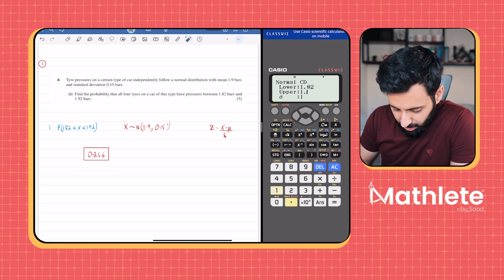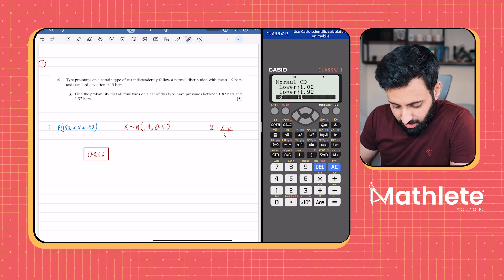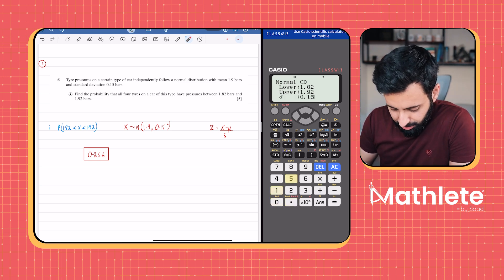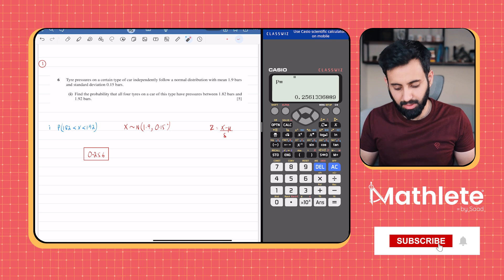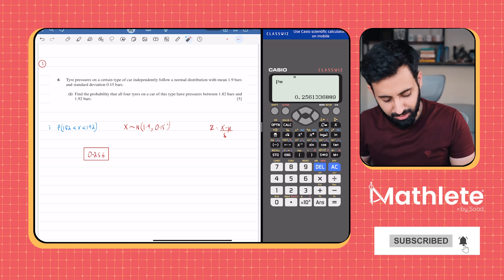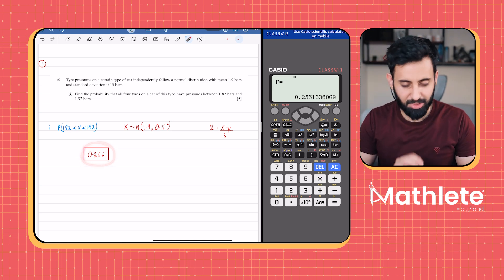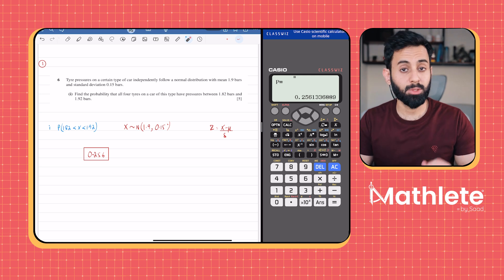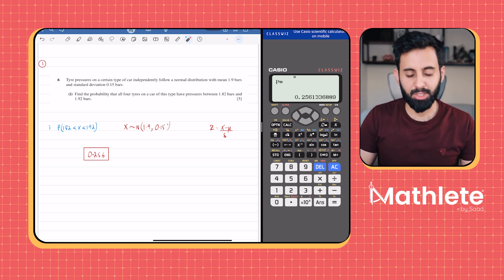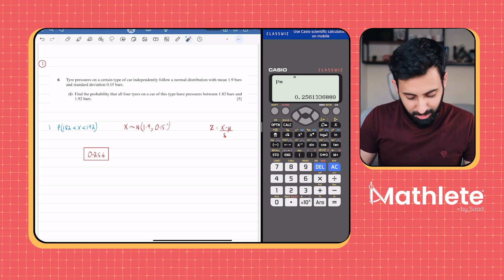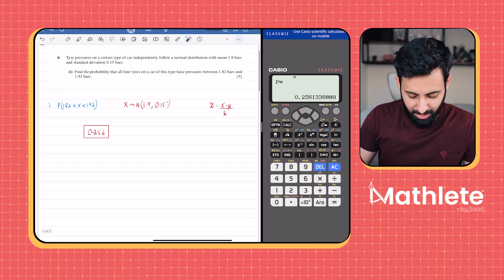What's the lower limit? That's 1.82, so type that, press equals. What's the upper limit? 1.92, type that, press equals. What's the sigma, the standard deviation? That is 0.15. What's the mean? That's 1.9. Wait for the magic, press the equals sign. There you go, 0.256. That's the answer. Your calculator has done all the hard work for you, which you still have to do, but now you can be 100% sure that you've done it correctly.